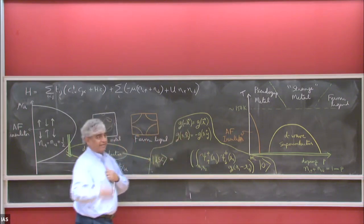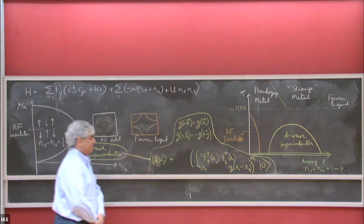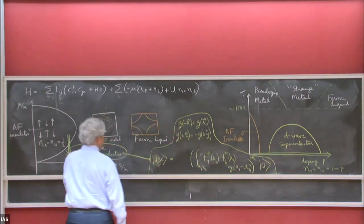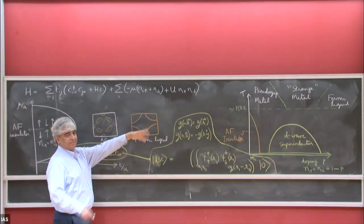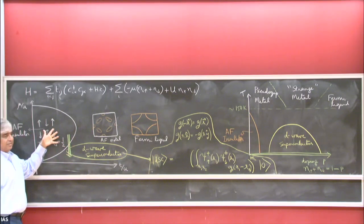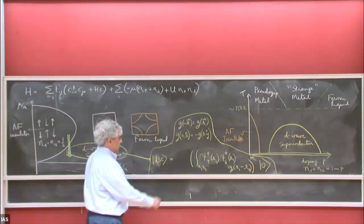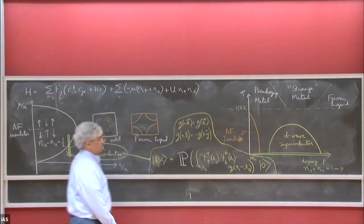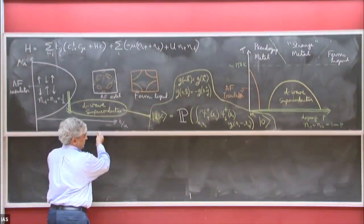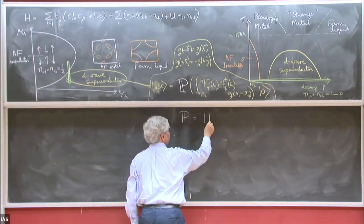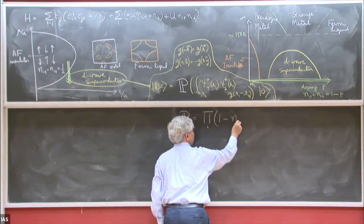One thing I didn't mention, which is crucial for everything we'll discuss today: there is a slight difference between the wave function you get starting from the paramagnon theory versus the one obtained from the t-J model. In the t-J approach there's an additional operator P — a projection operator — which projects onto non-doubly-occupied sites. P is the product over all sites i of (1 minus n_i_up n_i_down).